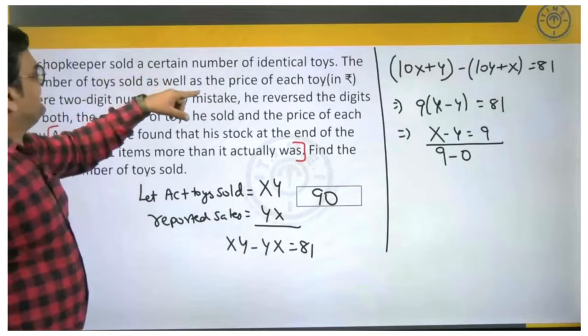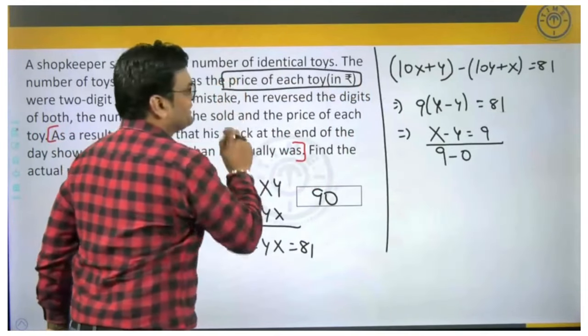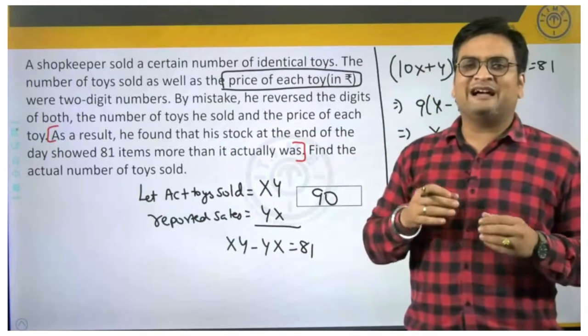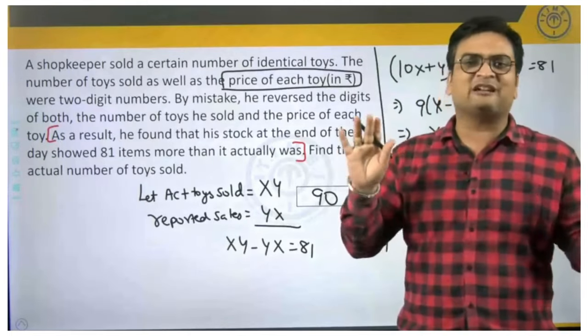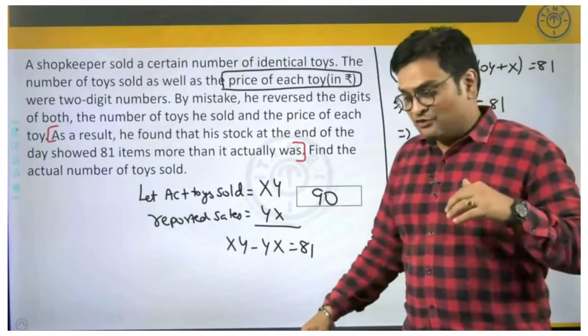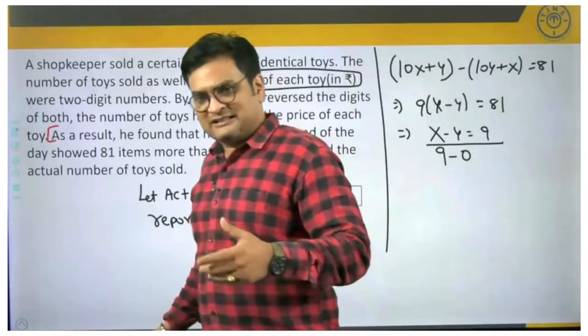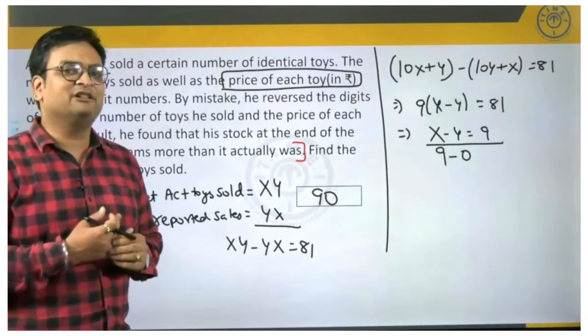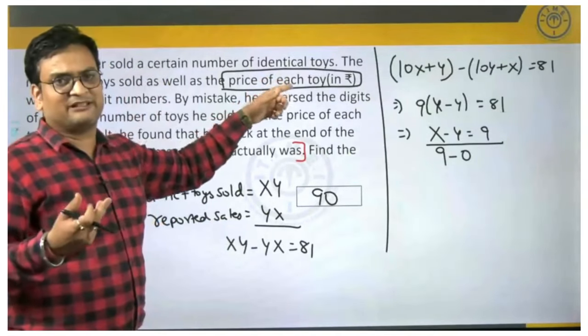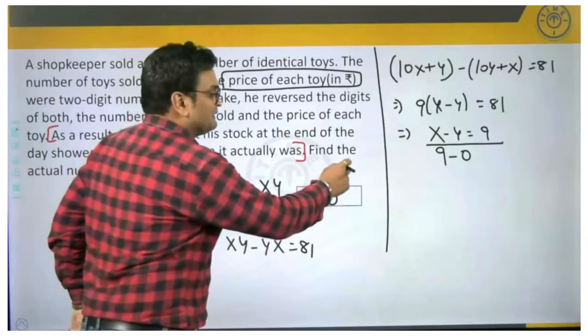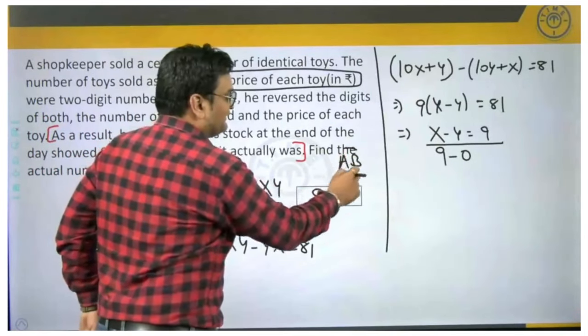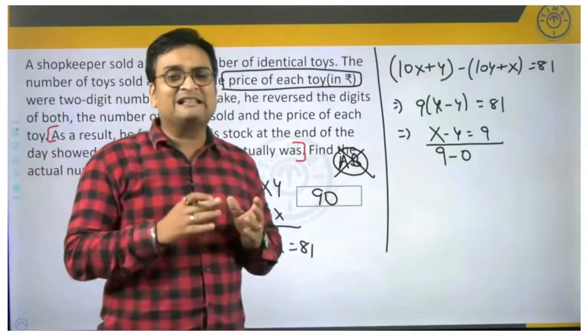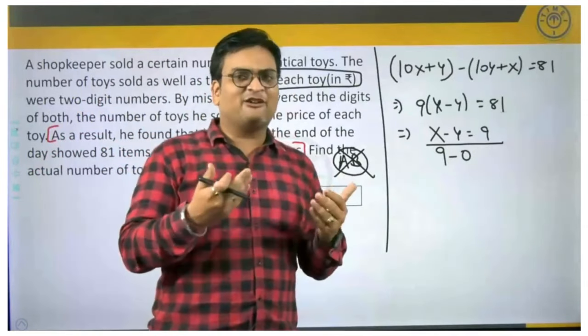Please notice one more thing, he is also talking about price of each toy which was also a two digit number, we did not even make use of that. Sometimes in your question, you will have some additional data which will not be required at least for answering that particular question. Please be aware of such additional unrequired data, so that you can save some time by not moving in that direction. For example, here one more possibility could have been, let us take the price as a, b or something. But that is entirely unnecessary. I hope we are clear with this. This question deals particularly with framing of the equation part.